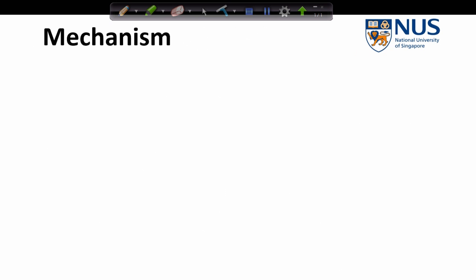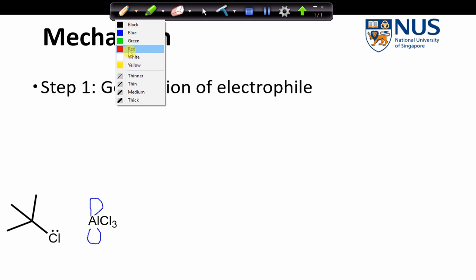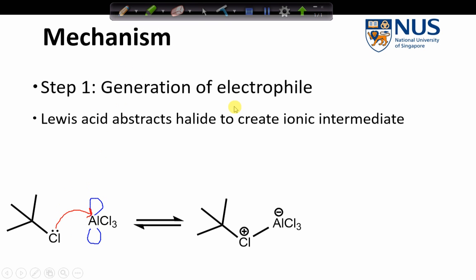Now we'll go on to look at the mechanism. So the mechanism comes in two steps. The first step is the generation of the electrophile. So starting with the alkyl halide and the presence of the acidic catalyst, which we can draw as having a vacant orbital like this, and we get the donation of these lone pair of electrons into this vacant orbital, and it abstracts the halide. And it creates this zwitterionic intermediate.